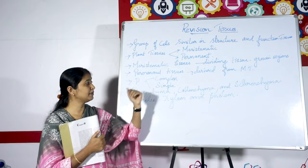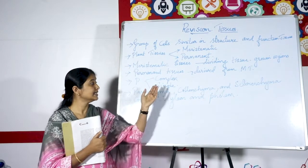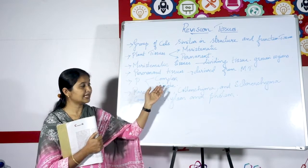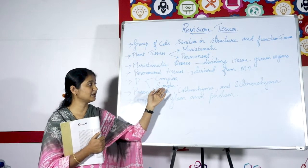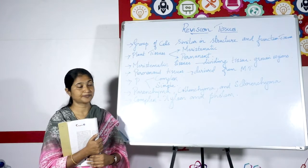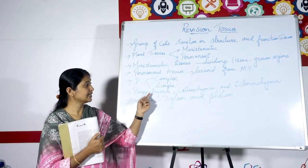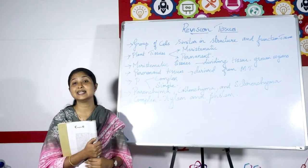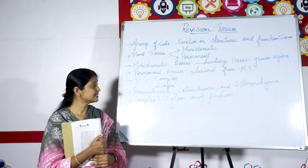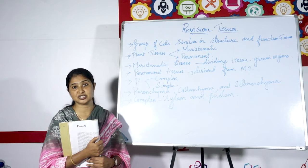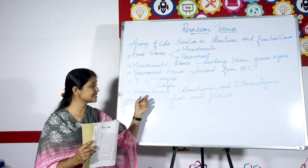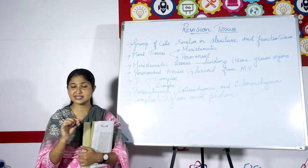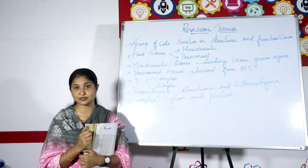Permanent tissue is of two types: complex permanent tissue and simple permanent tissue. We will first discuss the three simple tissues. The simple tissues are: parenchyma cells, collenchyma cells, and sclerenchyma cells. These are the simple permanent tissues.